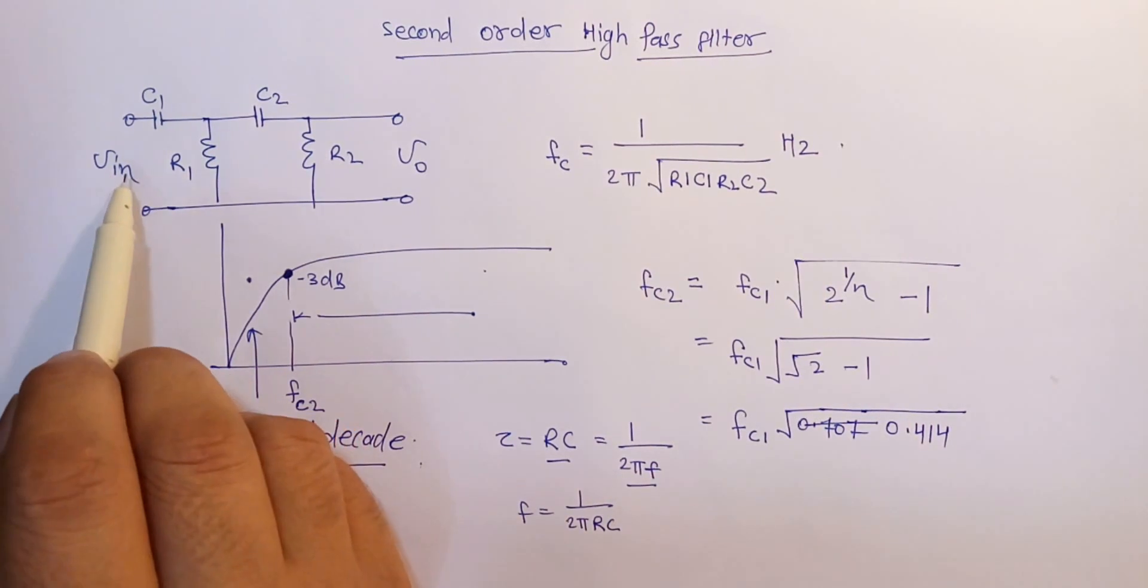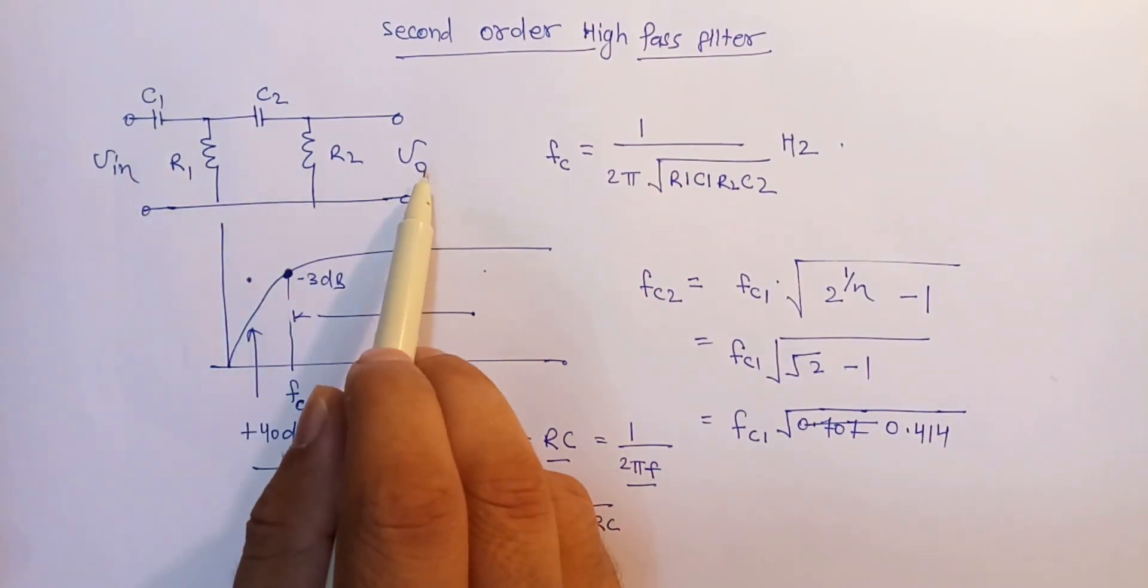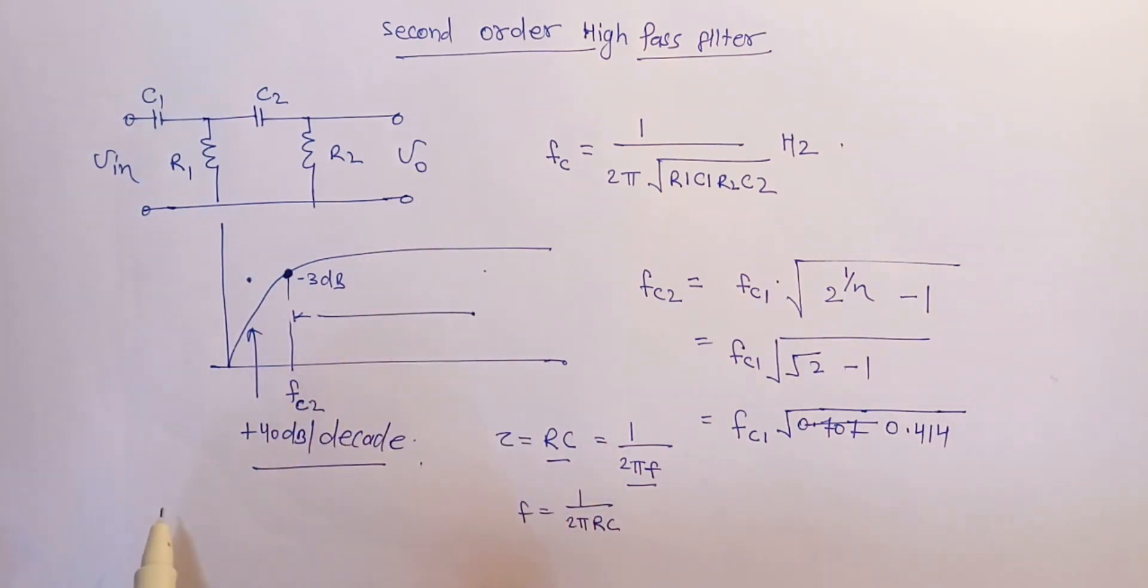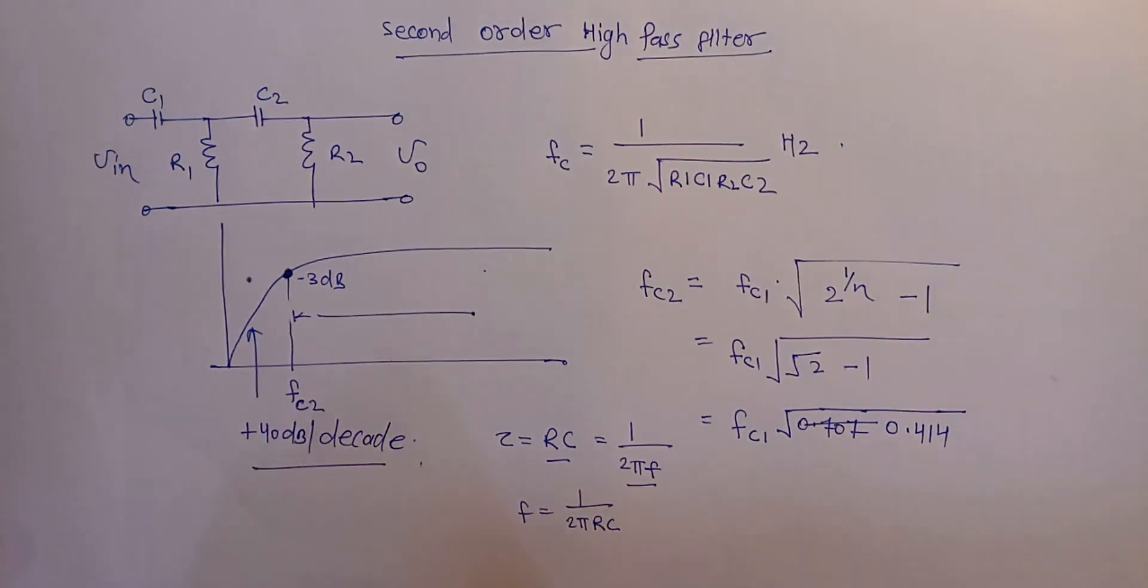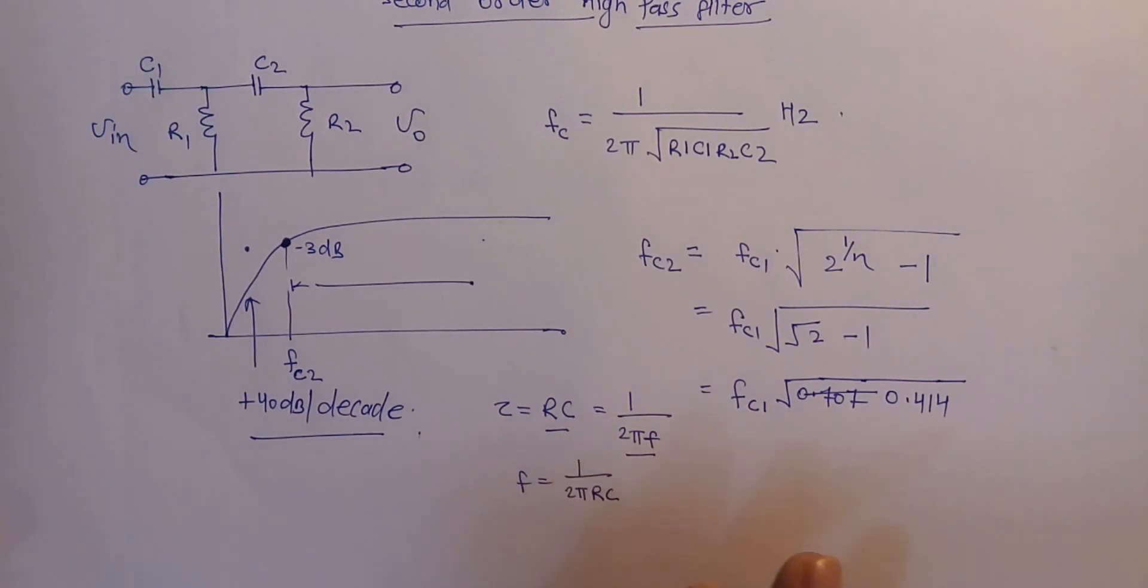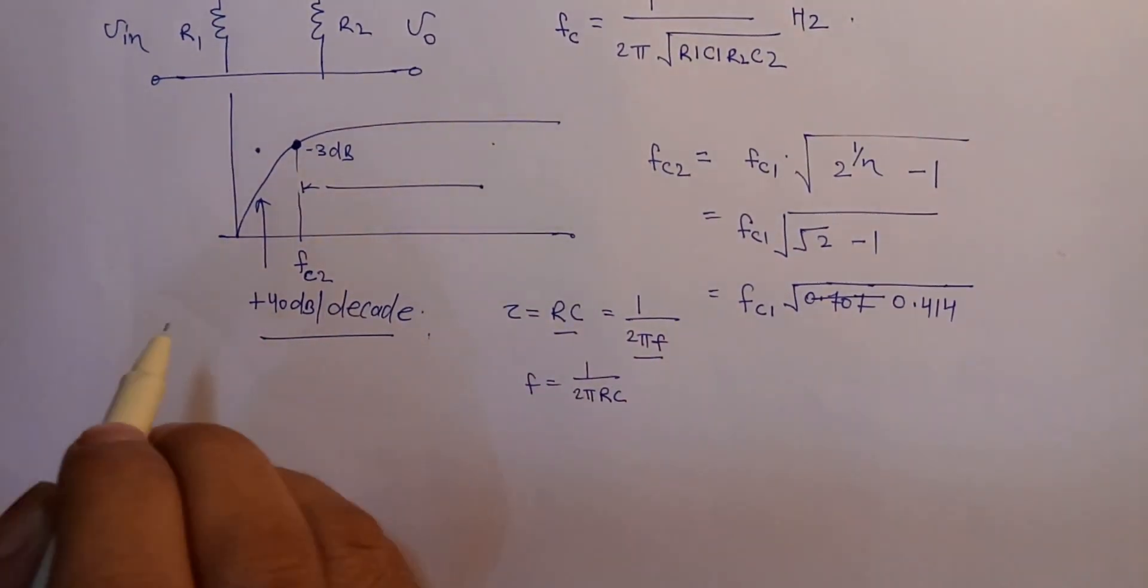There is also another application of this high pass filter. Now we have seen when we apply the sinusoidal input what we will get at the output, but if we apply a pulse wave or a square wave, now let's see what we will get into the output. So when we apply pulse wave at the input, it is known as a differentiator.